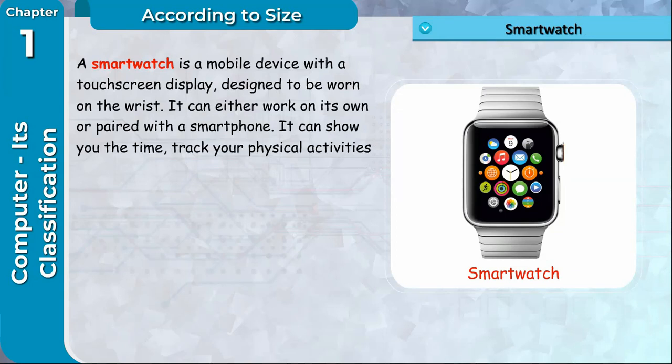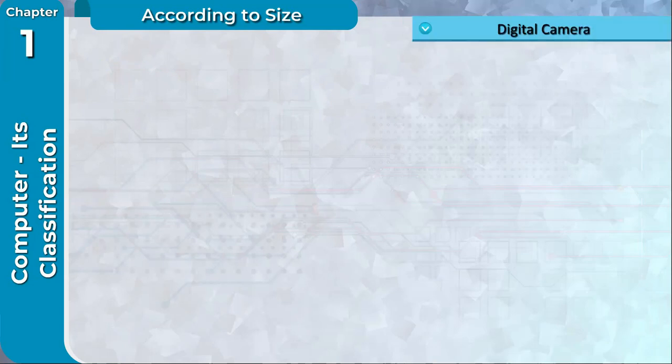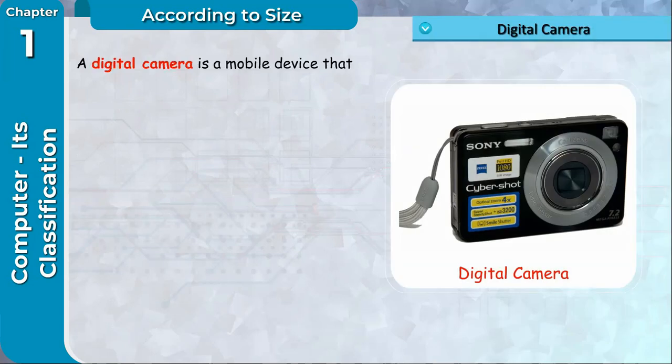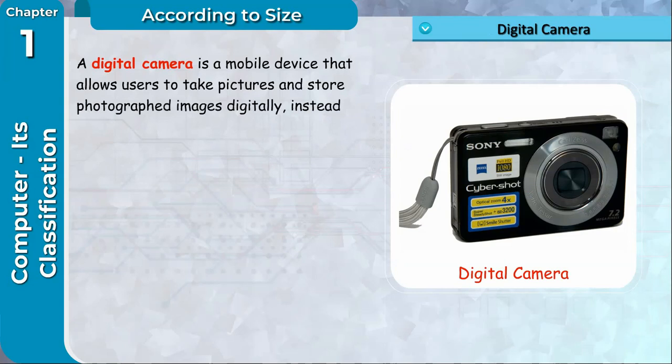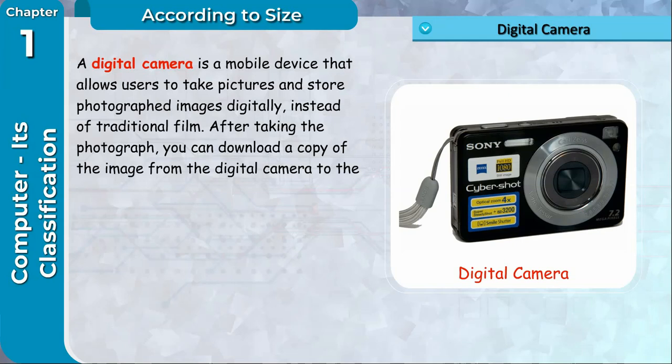Digital Camera: A digital camera is a mobile device that allows users to take pictures and store photograph images digitally instead of traditional film. After taking the photograph, you can download a copy of the image from the digital camera to the hard disk of the computer.